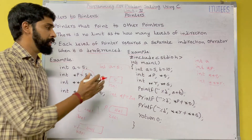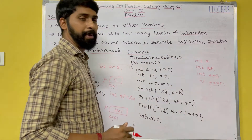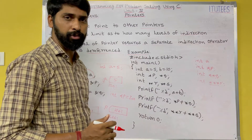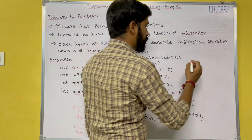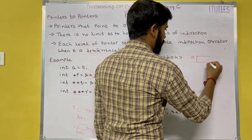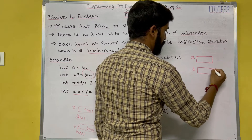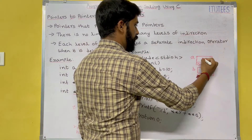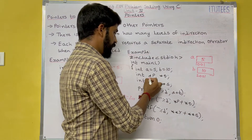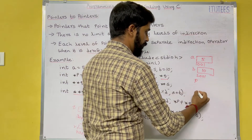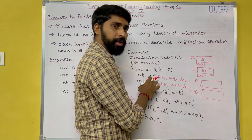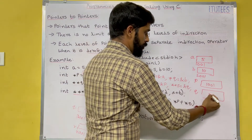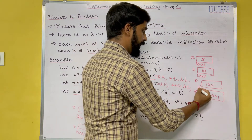Let us see one example. We have `a` equals to 5 and `b` equals to 10 and we are going to find the addition of two numbers. Let us assume the address of `a` is 1001 and `b`'s address is 2001. We have pointer variables `p` and `q`: `p = &a` so 1001 is stored in `p`, and `q = &b` so 2001 is stored in `q`.